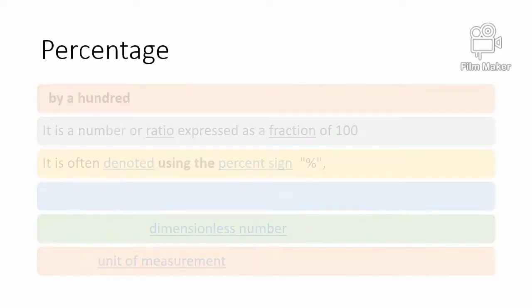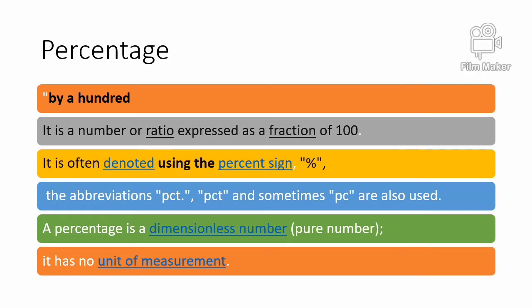Percentage. It is a number or ratio expressed as a fraction of 100. It is often denoted using the percent sign. The abbreviation is percent or PCT, and sometimes PC is also used. A percentage is a dimensionless number, or pure number — it has no unit of measurement.